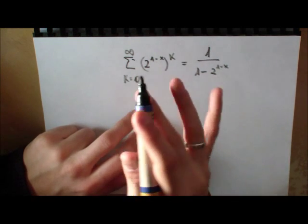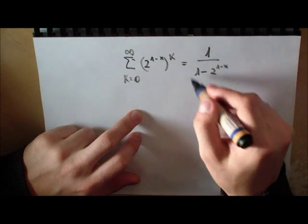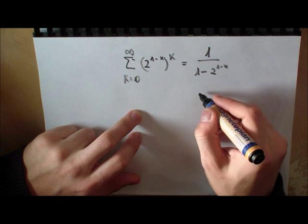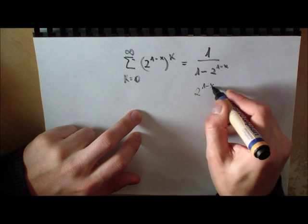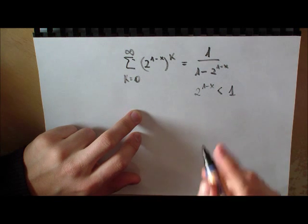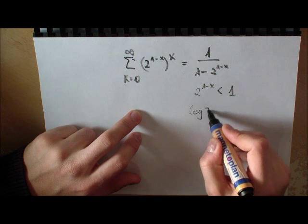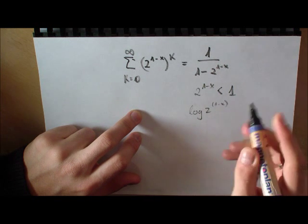This is the geometric series—look at my videos where I prove this formula. This is converging if 2 to the 1 minus x is smaller than 1. If you take the logarithm on both sides,